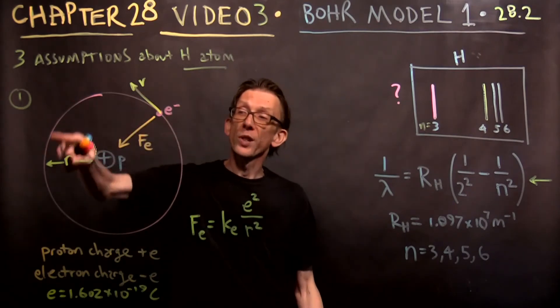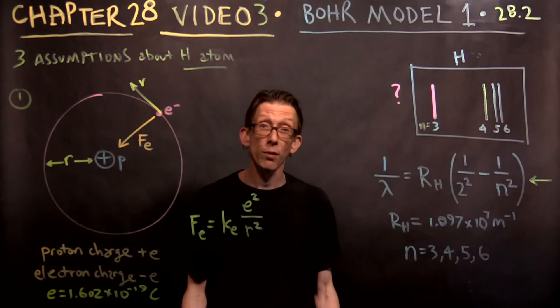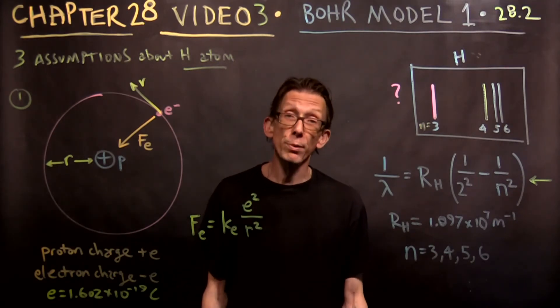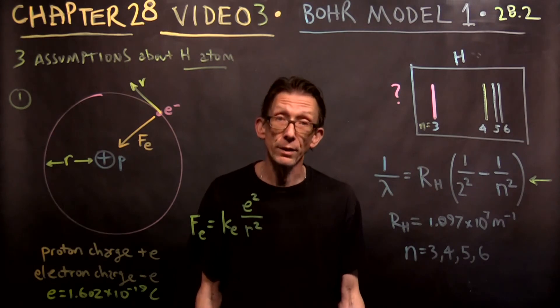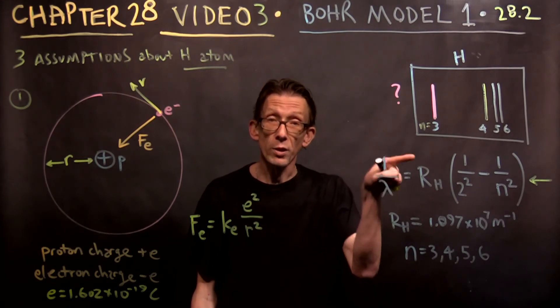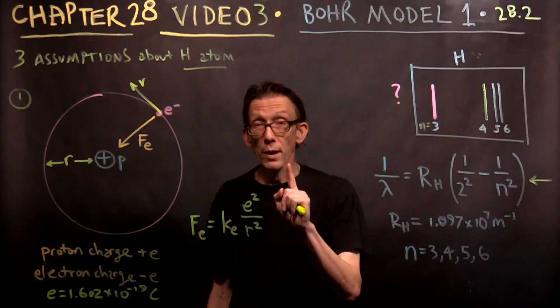He also knew the motion was circular. So this was centripetal acceleration. We've seen centripetal acceleration when we saw the motion of a charged particle in a magnetic field. It goes in the field and makes a circular motion. We talked about centripetal acceleration.